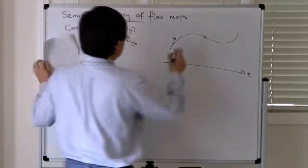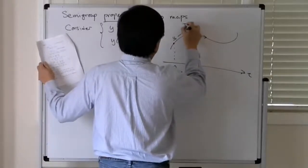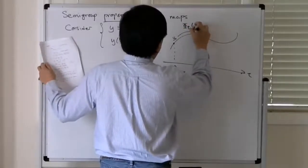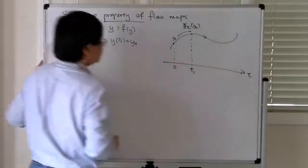And you want to look at the flow—let's see, the flow map given by time t1 applied to y0. So this is the solution then at time t1.